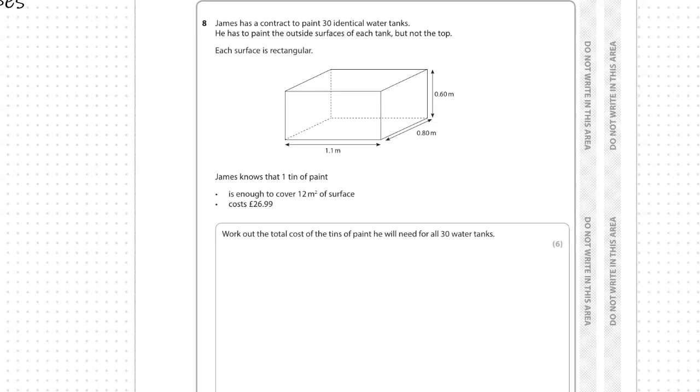James knows that one tin of paint is enough to cover 12 meters squared of surface and costs £26.99. Work out the total cost of the tins of paint he will need for all 30 water tanks.